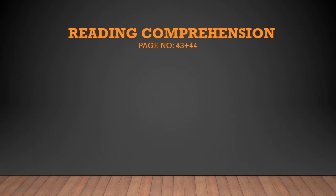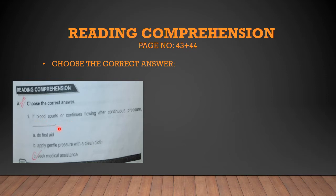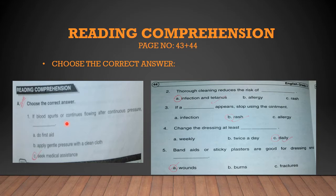Moving forward to Reading Comprehension on page number 43 and 44. It's really easy — choose the best answers. All these MCQs are from your chapter, you can do them easily. One or two will be done by me, the other ones will be done by yourself. Number one: if blood spurts and continues flowing after continuous pressure, what should you do? The options include applying gentle pressure with a clean cloth, and seeking medical assistance. The other ones will be done by yourself — it's really easy.